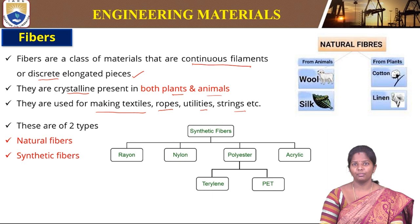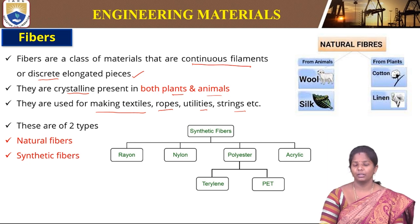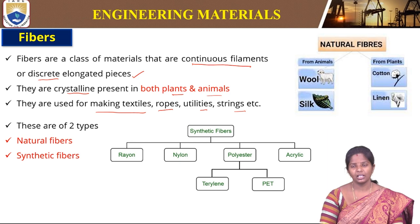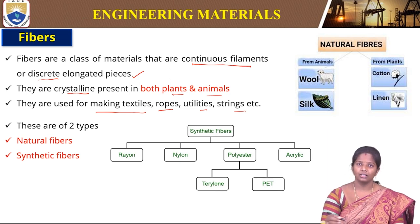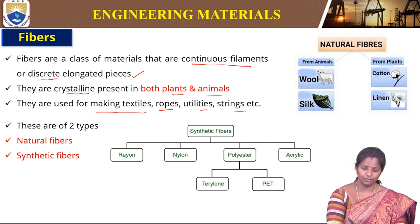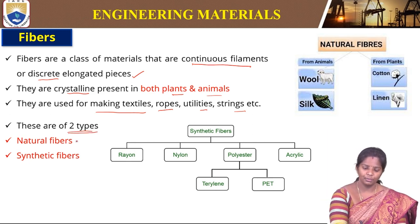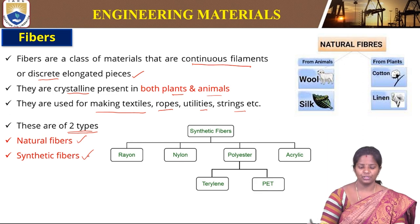For example, our clothing is made up of fiber, the ropes used for drying clothes are made up of fibers, and utilities like baskets and strings such as curtains are also fibers. There are two types of fibers: natural fibers and synthetic fibers.